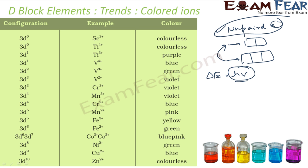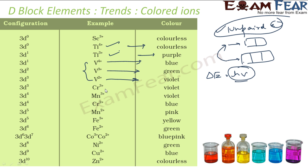For example, titanium⁴⁺ is colorless, while titanium³⁺ is purple. Vanadium⁴⁺ is blue, vanadium³⁺ is green, and vanadium²⁺ is violet. Chromium³⁺ is violet and chromium²⁺ is blue. Manganese³⁺ is violet and manganese²⁺ is pink. Iron³⁺ is yellow and iron²⁺ is green. These different ions show different colors.